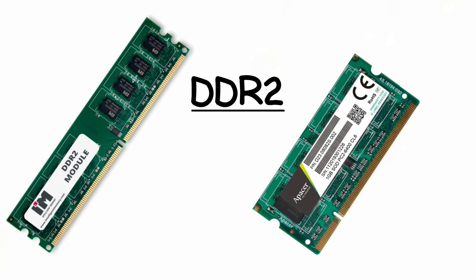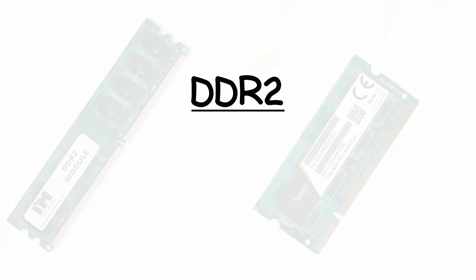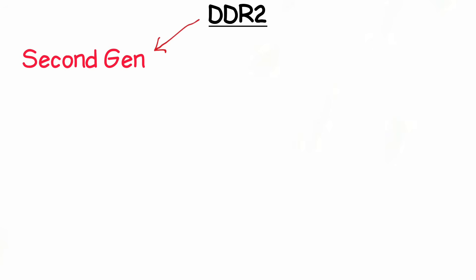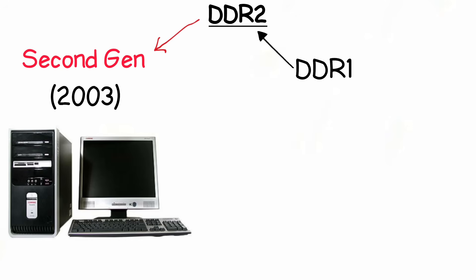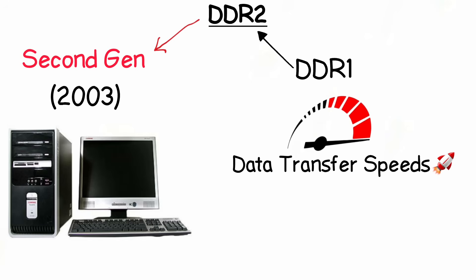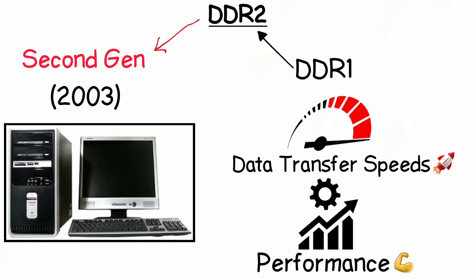DDR2 was the second generation of DDR memory technology used in computers. It was introduced around 2003, succeeding DDR1, and offered faster data transfer speeds and improved performance for systems of that time.